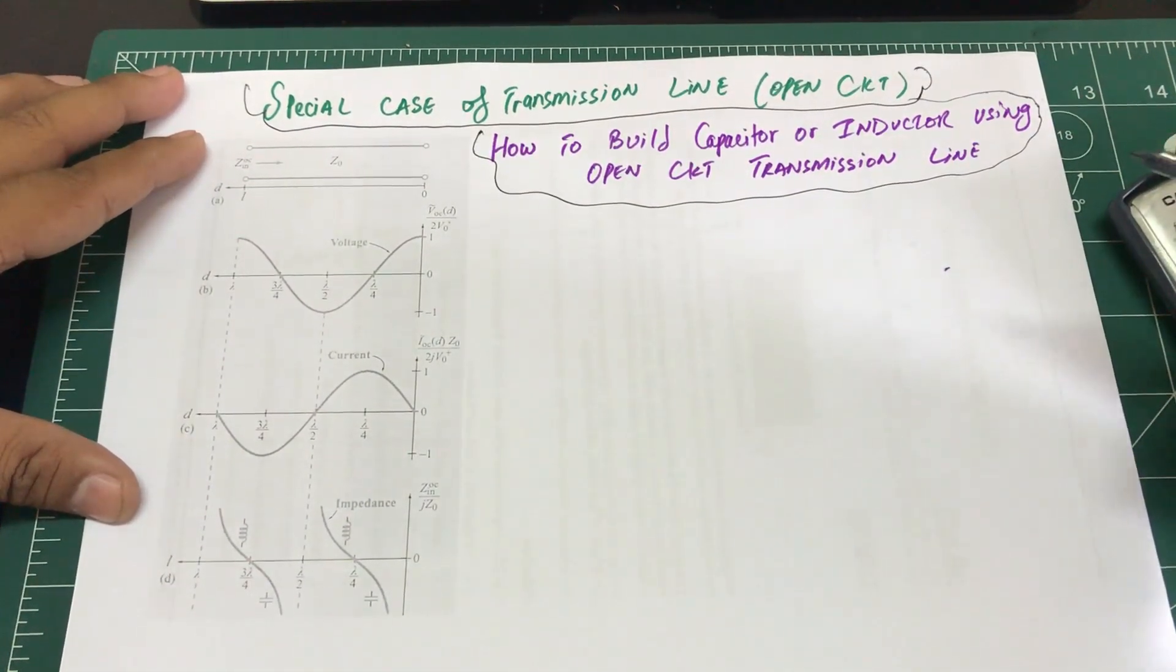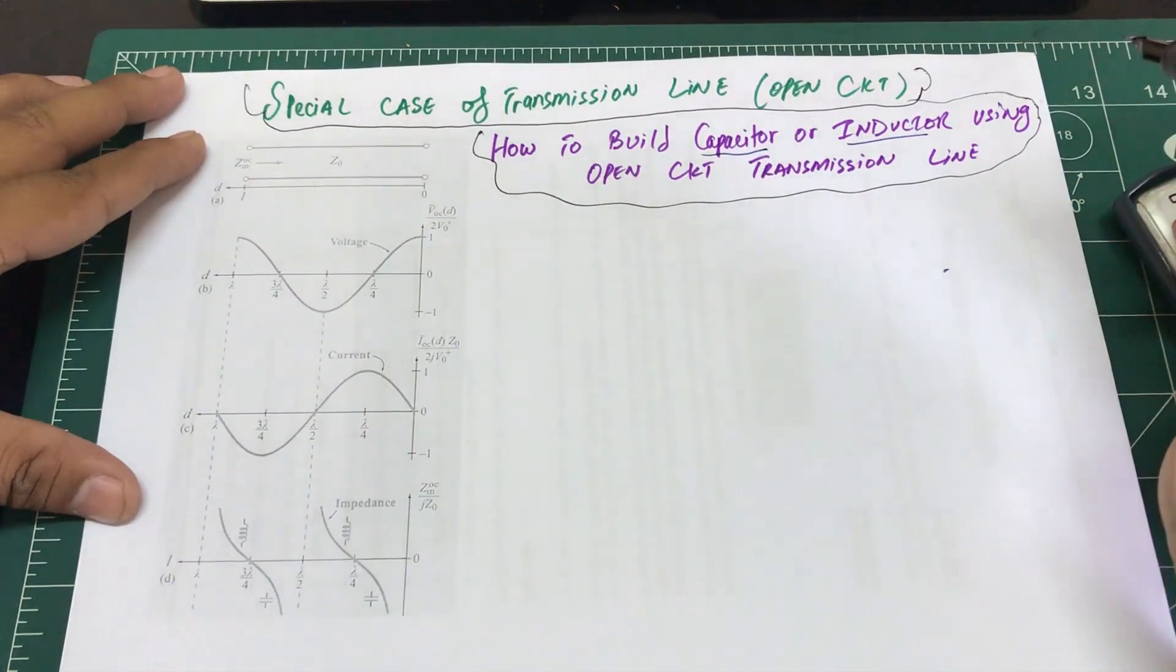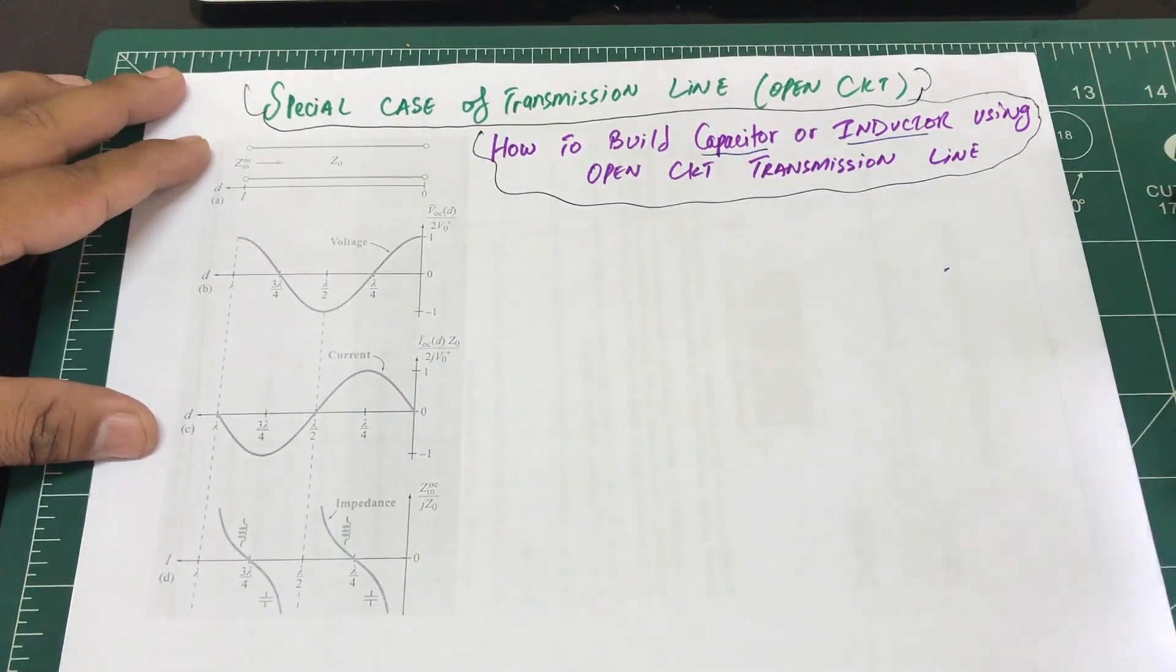We're going to look at open circuit transmission lines - how to build capacitors and inductors using open circuit transmission lines. We're going to do exactly the same thing that we did for short circuit.